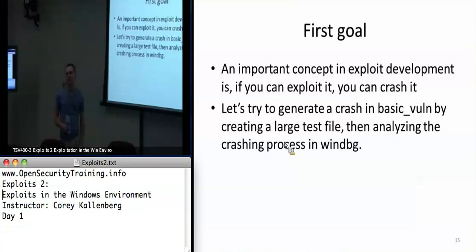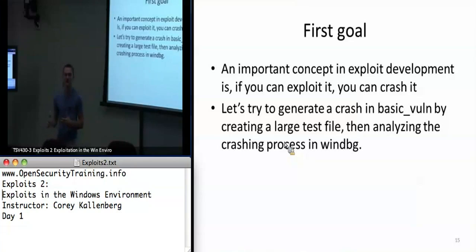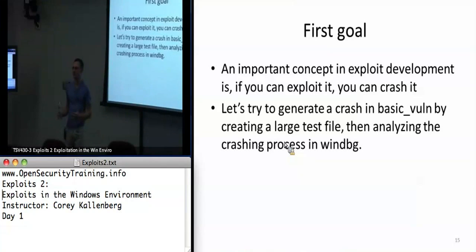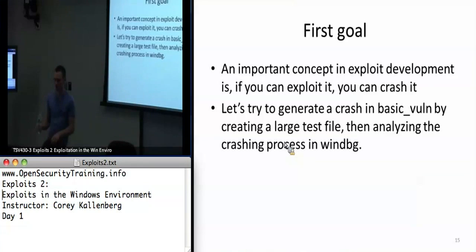Remember from Exploits 1 that if you can hack something, you can crash it. If you can change EIP to point to your shellcode, you can obviously point EIP to a bogus address and get a crash. Go ahead and make sure you can get a crash in BasicVolm by giving it a payload that's too big. For my remote VBCast students — are you able to get a crash as well with the big file?